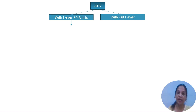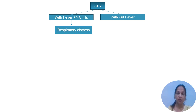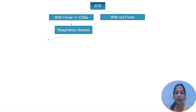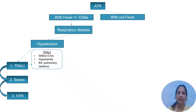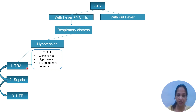This is our approach to diagnosing acute transfusion reactions based on signs and symptoms. When a patient presents with fever with or without chills and rigors, along with acute onset dyspnea and hypotension, we have to suspect TRALI, sepsis, and hemolytic transfusion reaction. When there is acute onset dyspnea within six hours, a chest X-ray showing bilateral pulmonary edema, hypotension, and with or without fever, we have to suspect transfusion-related acute lung injury (TRALI).